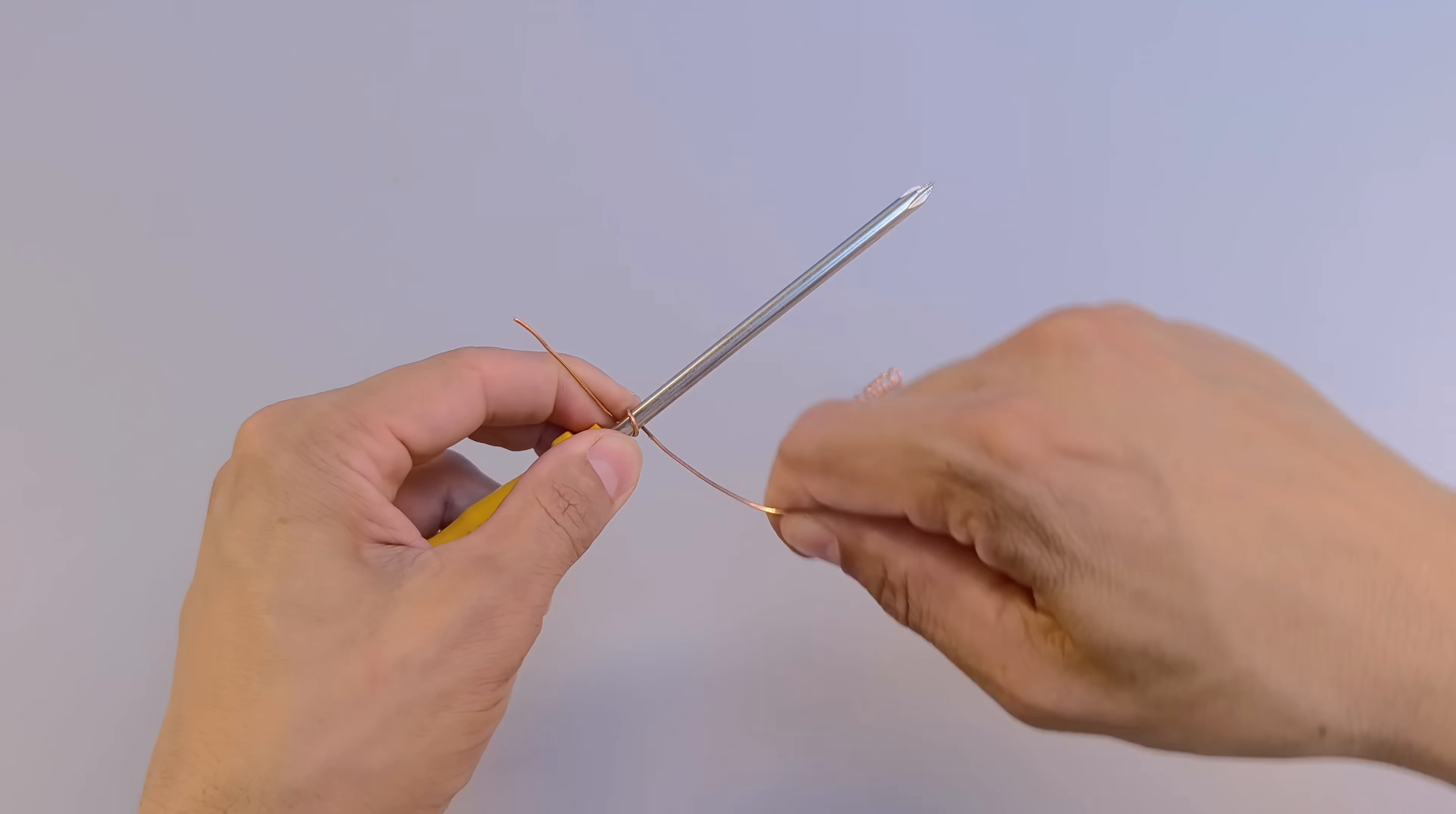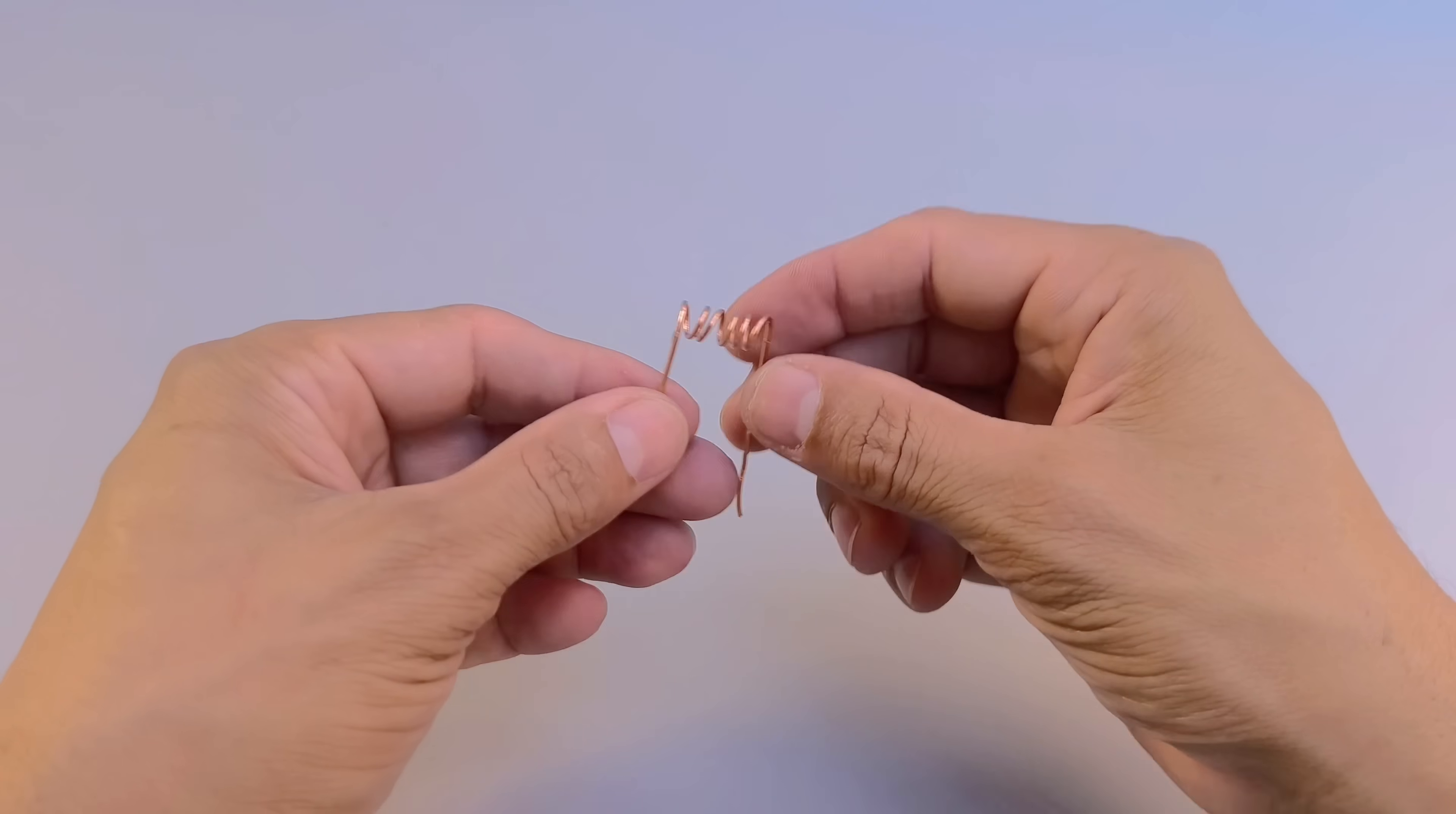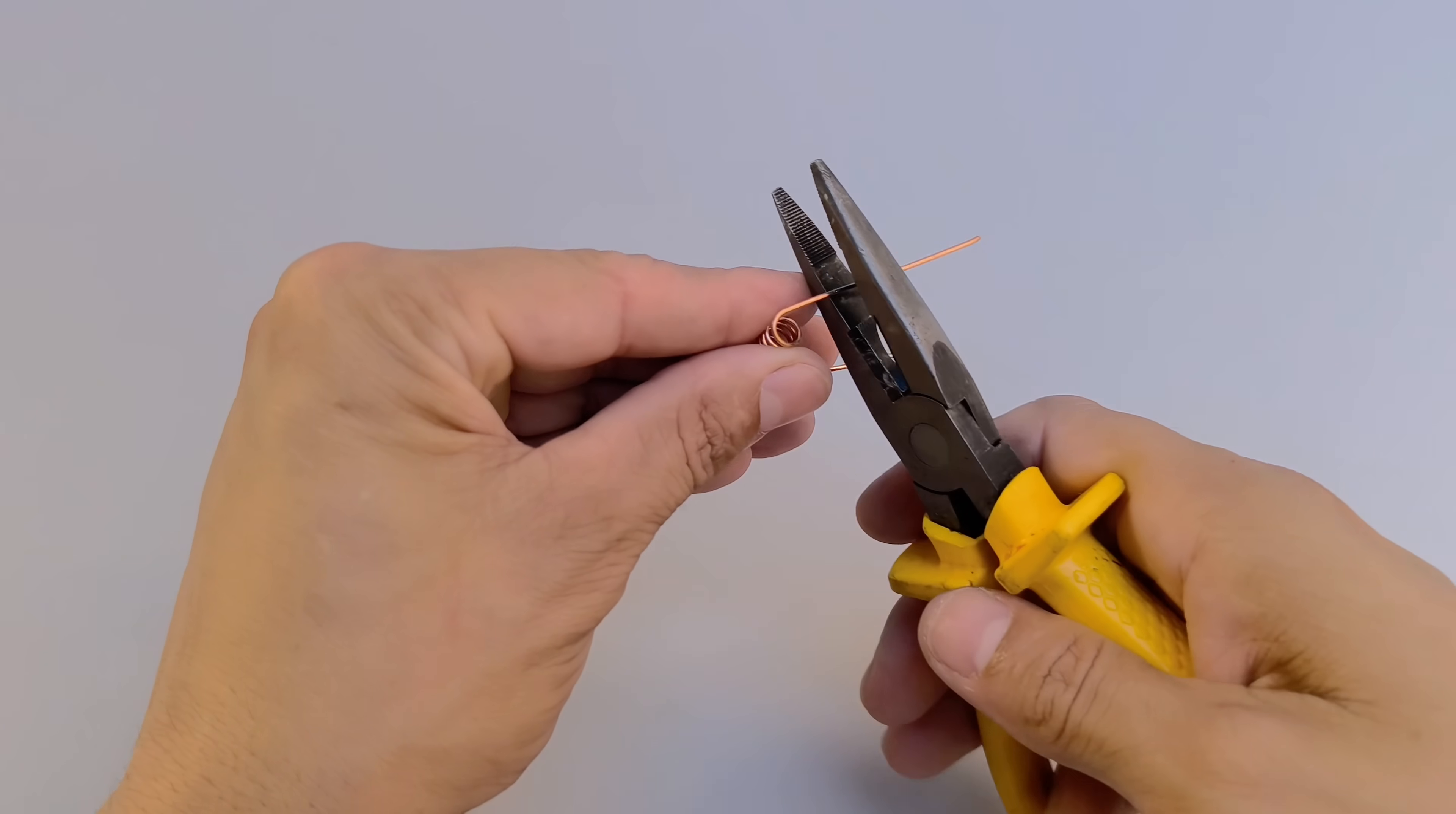If you don't have coaxial cable available, you can use a rigid copper electrical wire as an alternative. Simply mold it into a small spring shape, similar to the procedure used with coaxial cable. While not ideal, this type of adaptation can pick up signals reasonably well, especially for lower frequencies or for improvised situations. However, the quality and efficiency may vary compared to using the proper cable.